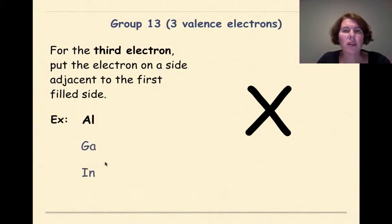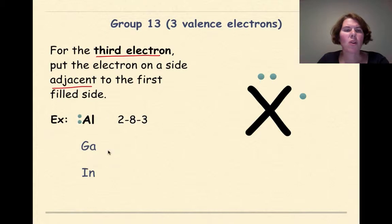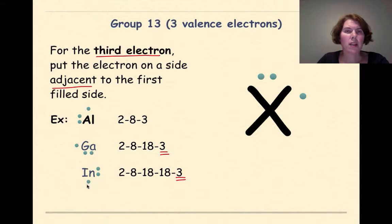Group 13 has 3 valence electrons. For the third electron, place it on a side adjacent to the first filled side — so you'll have 2 electrons together and 1 adjacent. Aluminum has an electron configuration of 2, 8, 3 — 3 valence electrons. Gallium is 2, 8, 18, 3. Indium is 2, 8, 18, 18, 3 — also 3 valence electrons. All these elements are in the same group, and that's an important thing to remember.